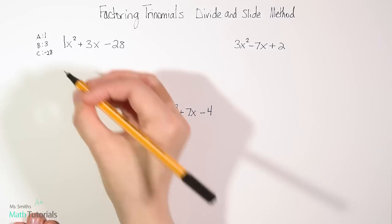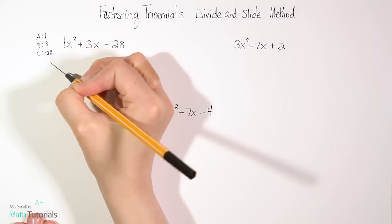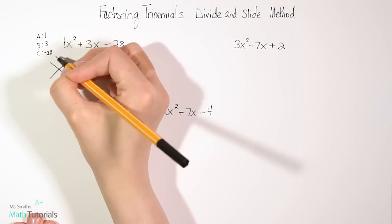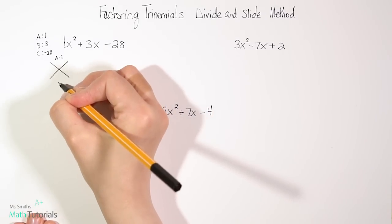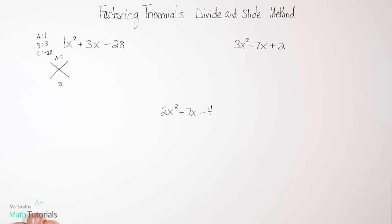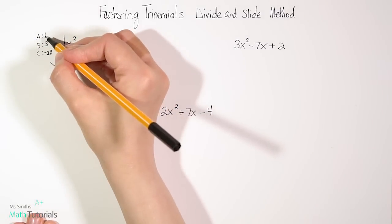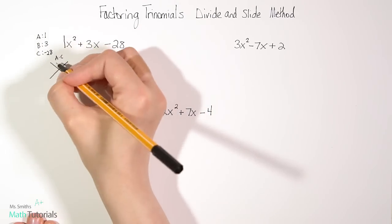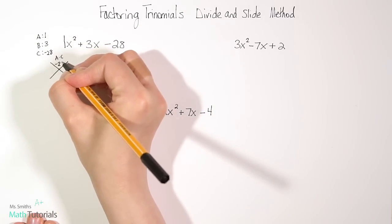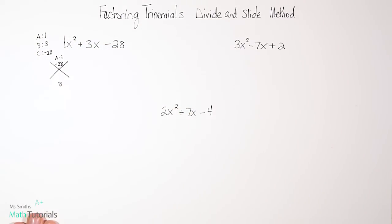So now we're going to build our X. And the way that X works is a times c goes in top of the X and b goes in the bottom of the X. So a is 1 and c is negative 28. So 1 times negative 28 is negative 28. And our b value is 3.